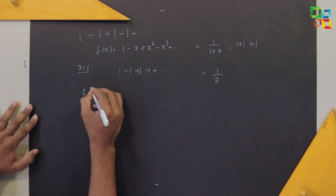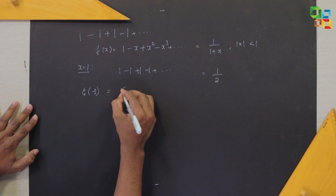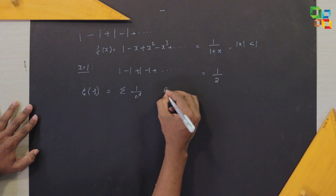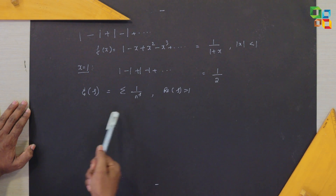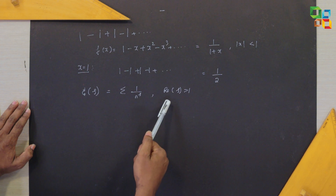Now let us come to the famous Ramanujan summation: 1 plus 2 plus 3 plus dash dash equals minus 1 by 12. We will use something called the Riemann zeta function, the celebrated function in the mathematical world. We define the Riemann zeta function as zeta of s equals summation 1 by n to the power s, for real part of s greater than 1. For real part of s less than or equal to 1, this series is no more convergent — it is divergent — so this definition is not valid there.